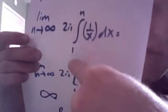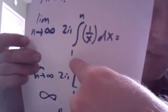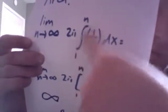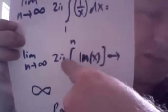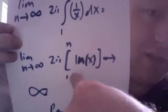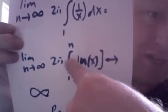The surface area, though, is the limit as n goes to infinity of 2 pi times the integral from 1 to n of 1 over x dx. That equals 2 pi times the difference of ln of x evaluated from 1 to n. And that is divergent — that gives you infinity.